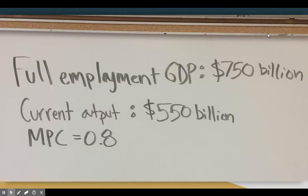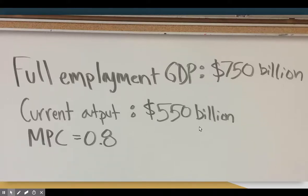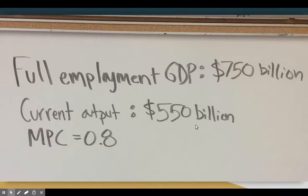Here's our given information. We have full employment GDP, or full employment output, at $750 billion. That is our maximum — that is where we want to be, where we should be. That would be at YF on our AD-AS graph, the YF label coming down from LRAS. However, we are currently sitting at output of $550 billion, which is a problem. We are in a temporary economic problem. We are also given that the MPC is 0.8, which we'll come back to in a bit.